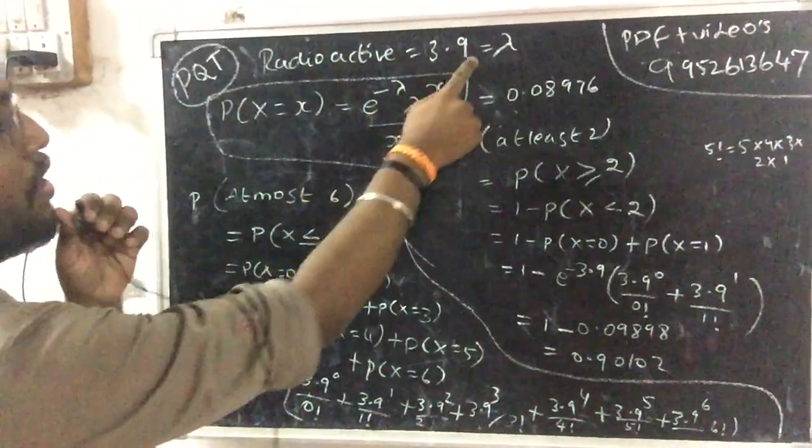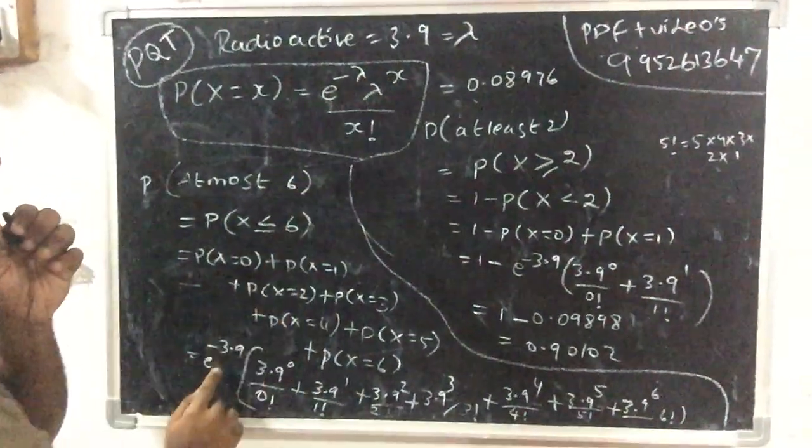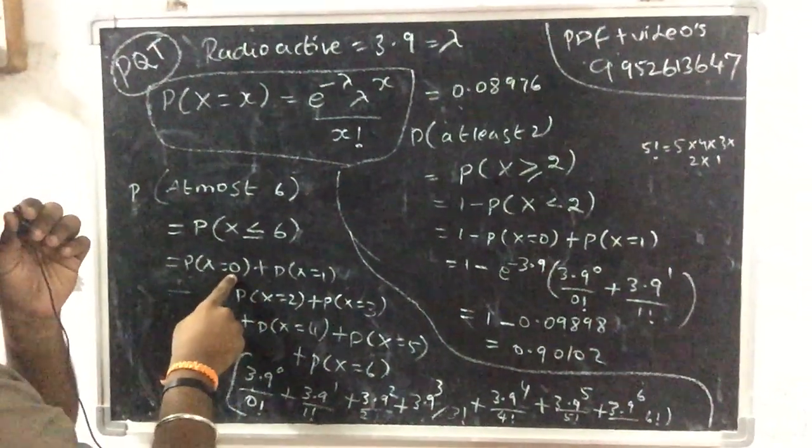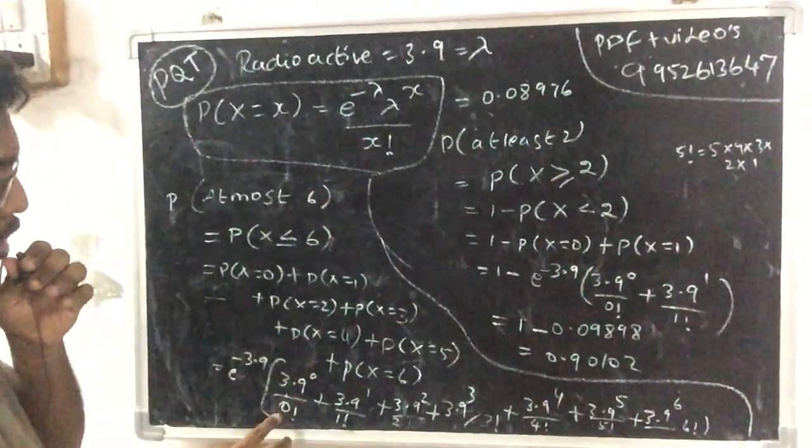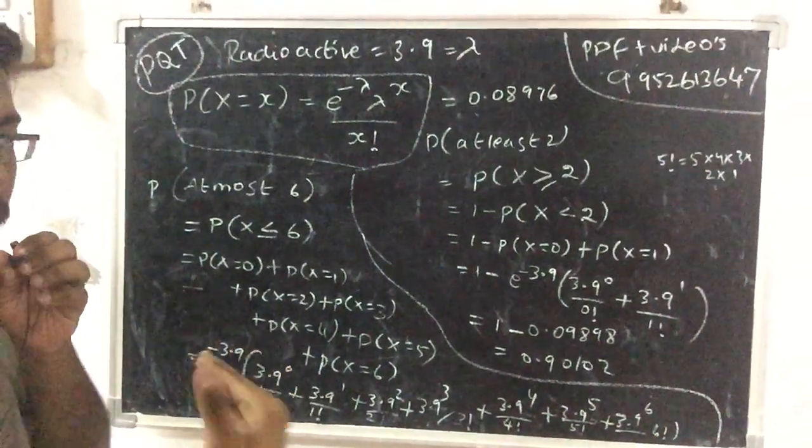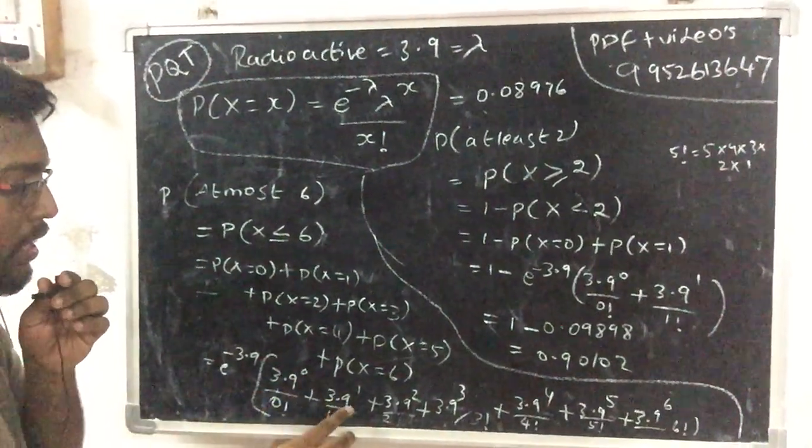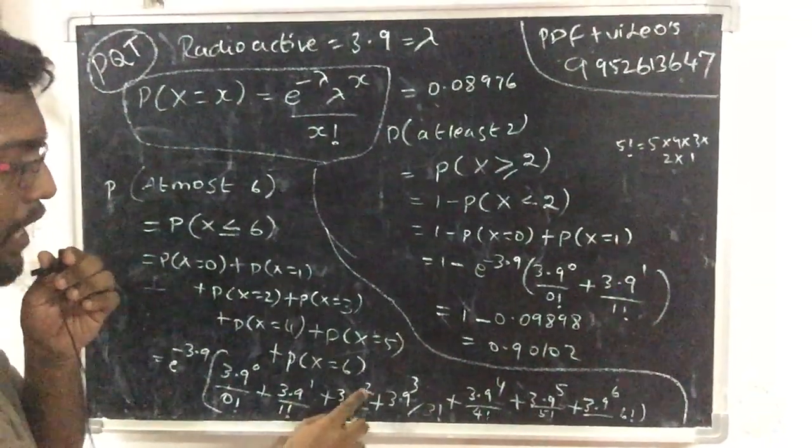The Poisson formula: lambda equals 3.9, e to the power minus 3.9, times lambda to the power X over X factorial. For X equals 0, lambda to the 0 power equals 1. Then 3.9 to the power 1, 3.9 to the power 2, and so on.